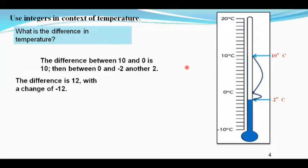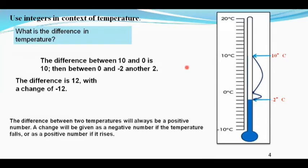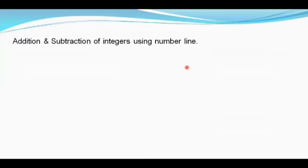So the difference is 12, with a change of minus 12. The difference between two temperatures will always be a positive number. A change will be given as a negative number if the temperature falls, or as a positive number if it rises. Let us learn addition and subtraction of integers using a number line.